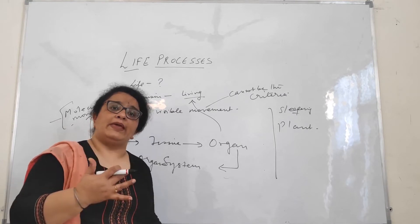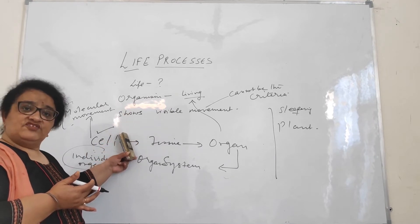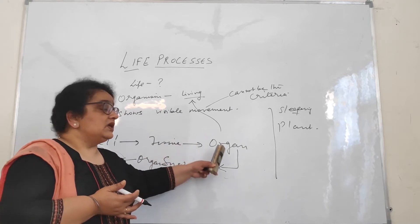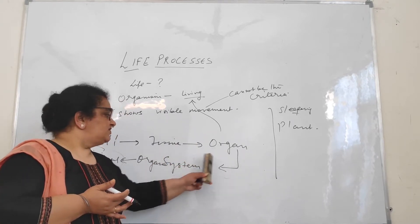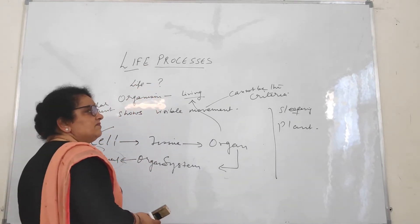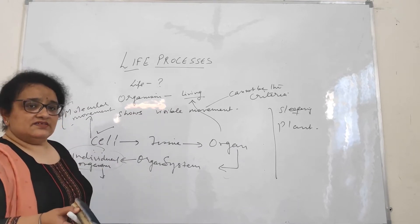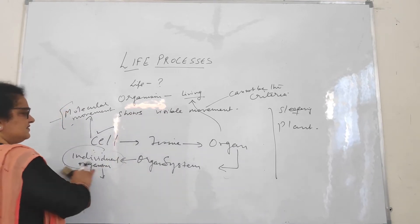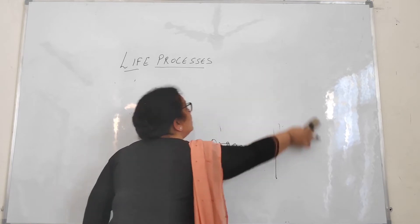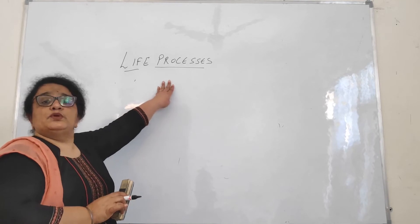Bio means living. Biochemical reactions occur in the cell. When the cell is functioning properly, the tissue will function properly, the organ will function properly, and so on — and we call that individual a living organism. The important question is: what is the criteria we consider for an organism to be living? This will be discussed later as an NCERT question. All these molecular movements constitute the life processes.